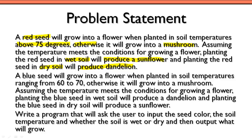The next thing we're looking at is a blue seed. So we've got this choice between a red seed and a blue seed. It will grow into a flower when planted in soil temperatures that range between 60 and 70. Otherwise, it's also going to grow into a mushroom. Assuming the temperature meets the conditions, planting the blue seed in wet soil will produce a dandelion, and planting the blue seed in dry soil will produce a sunflower — basically the opposite of what we had before.